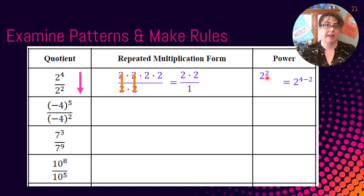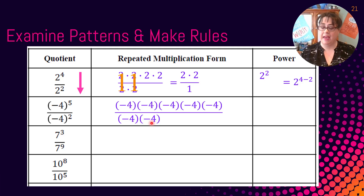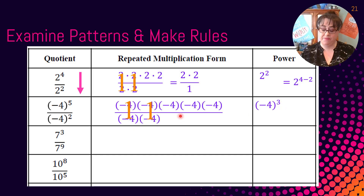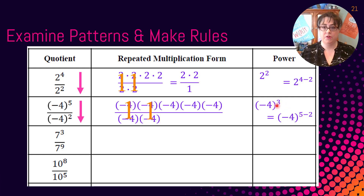Let's examine that hypothesis further. Take the base negative four to the fifth divided by negative four squared. Expanding: negative four times itself five times, over negative four times itself twice. Negative four over negative four is one, so those reduce, and I'm left with negative four to the third. Five minus two equals three, so negative four to the five minus two is negative four to the third. The subtraction rule is holding up — let's test it one more time.